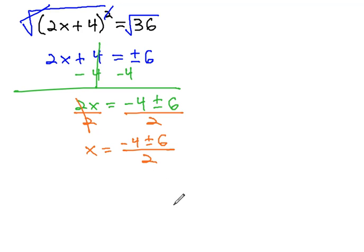Now that x is alone, we're going to simplify this by taking it in the two directions that are intended by the plus or minus. One where we add the numerator together, and one where we subtract the numerators. When we add, negative 4 plus 6 is 2 over 2, and when we subtract, negative 4 minus 6 is negative 10 over 2.